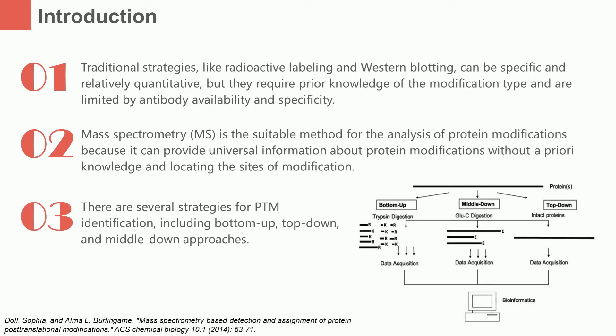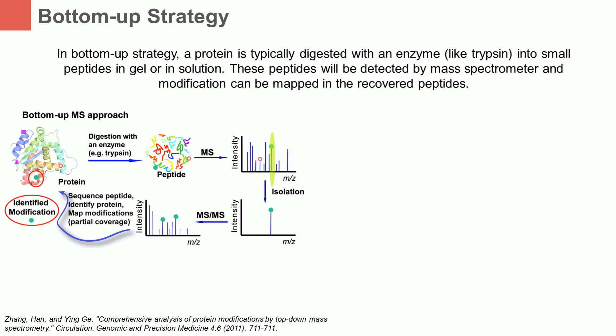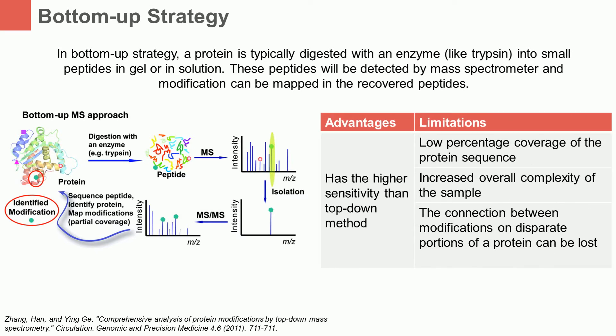There are several strategies for post-translational modification analysis, including bottom-up, top-down, and middle-down approaches. The bottom-up strategy for post-translational modification identification is the traditional proteomic approach. In bottom-up strategy, a protein is typically digested with an enzyme like trypsin into small peptides in gel or in solution. These peptides will be detected by mass spectrometer, and modification can be mapped in the recovered peptides. Bottom-up strategy has higher sensitivity than the top-down method.